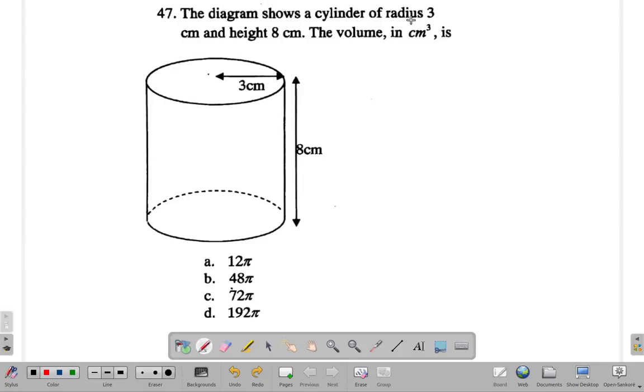The diagram shows a cylinder of radius 3 cm. Okay, 3 right here. And a height of 8. Okay, this is 8. The volume in cm³ is